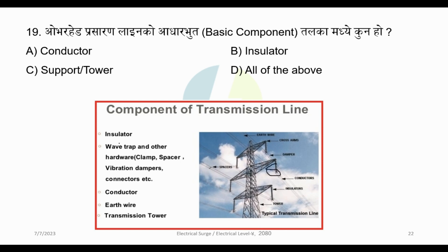An insulator is installed on a conductor or an insulator support. There is a transmission tower. It is installed in a tower or a support structure. If there is a vibration damper or a compressor, it is installed in a transmission line.